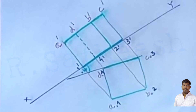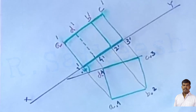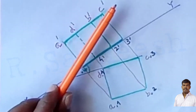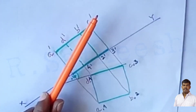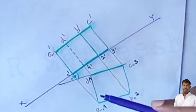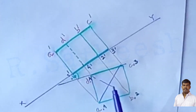Now the solid is cut by a sectional plane that is perpendicular to the VP and 35° inclined to the HP. The cutting plane meets the axis 25 mm above the HP. Since 25 mm above the HP refers to the axis, first draw lines joining the diagonals to find the center point.